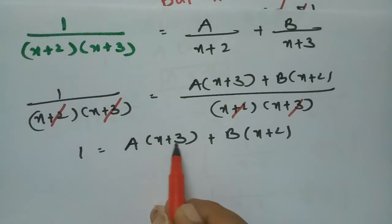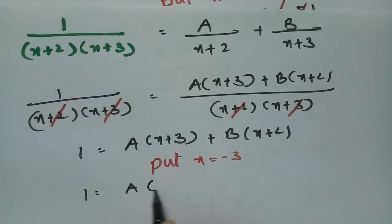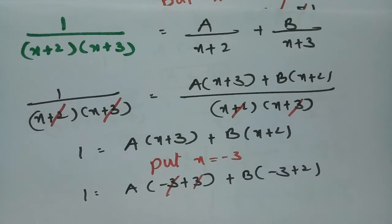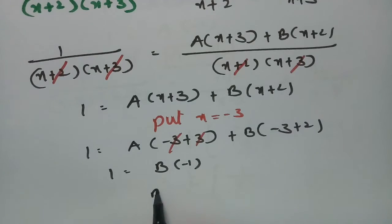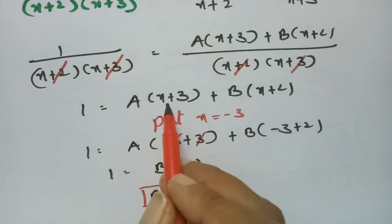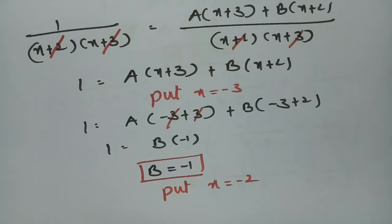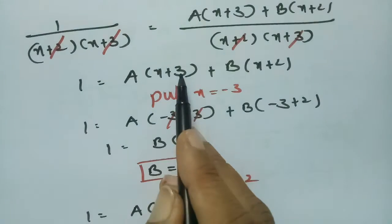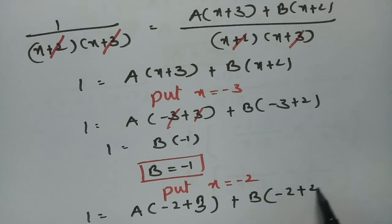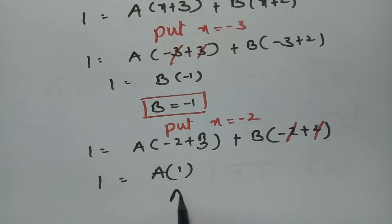To make the A term zero — there is plus 3 — put x equal to minus 3 in equation 1: 1 = A(minus 3 plus 3) + B(minus 3 plus 2). Cancelling the A term: 1 = B times (minus 1). Therefore, B = minus 1. To find A, put x equal to minus 2: 1 = A(minus 2 plus 3) + B(minus 2 plus 2). The B term is zero, so 1 = A times 1. Therefore, A = 1.